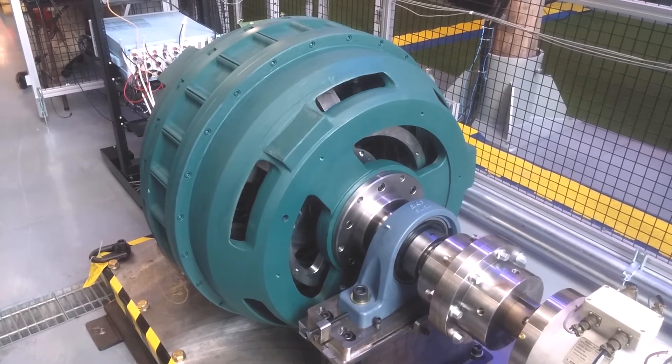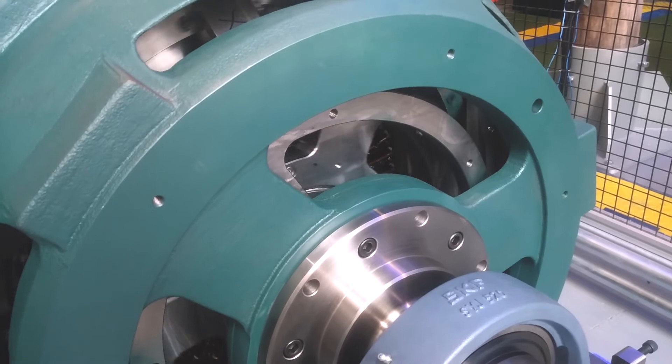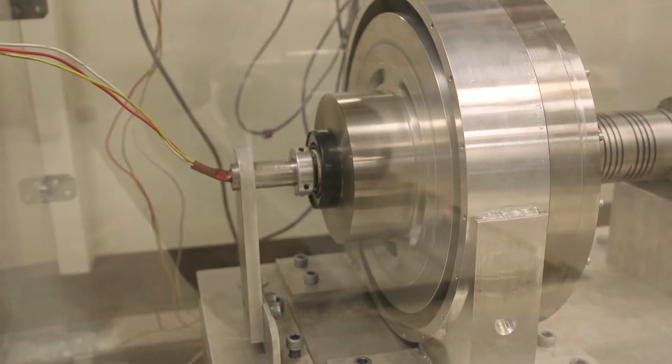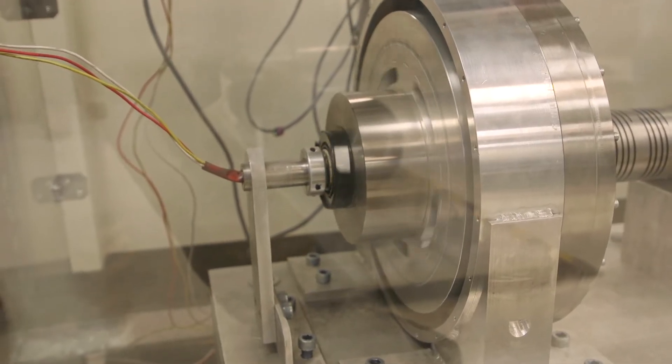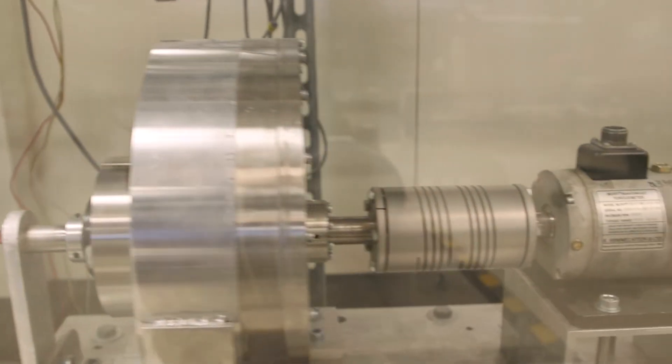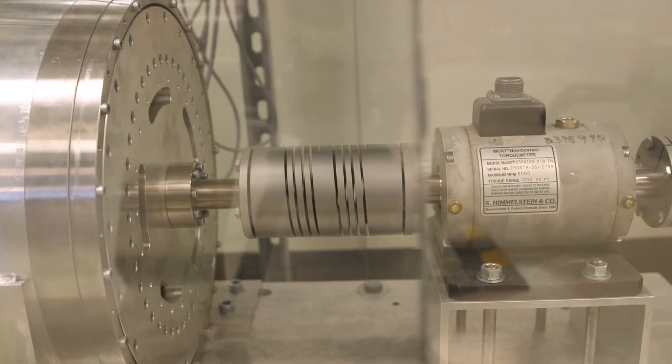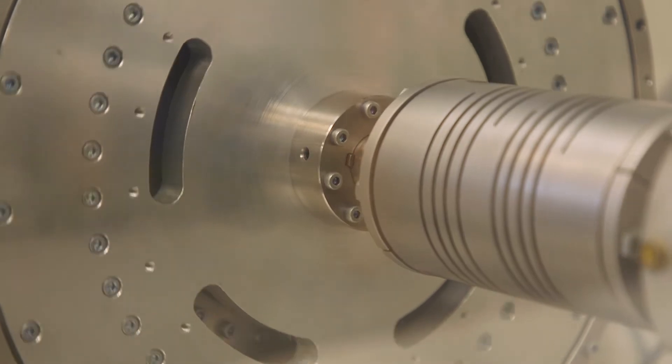The biggest difference between magnetic gears and mechanical gears is that magnetic gears are non-contact. With mechanical gears you have interlocking teeth rubbing against each other, whereas with magnetic gears you have magnets exerting forces on each other without any contact.